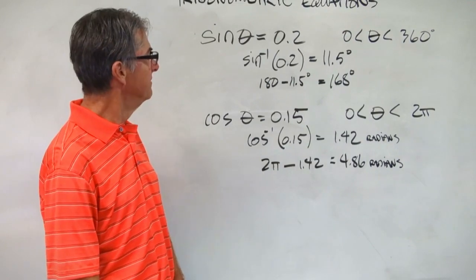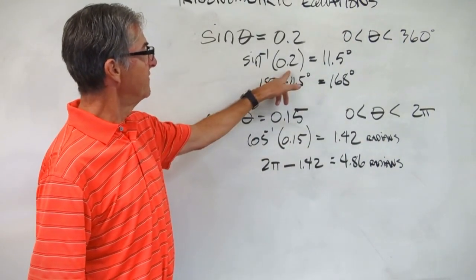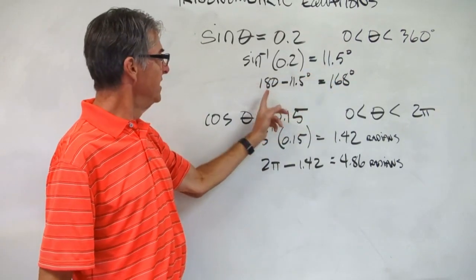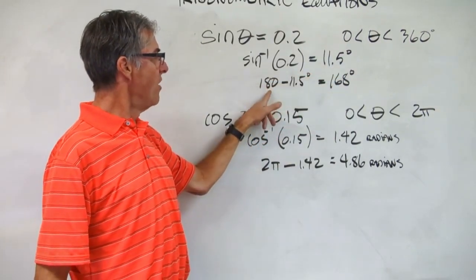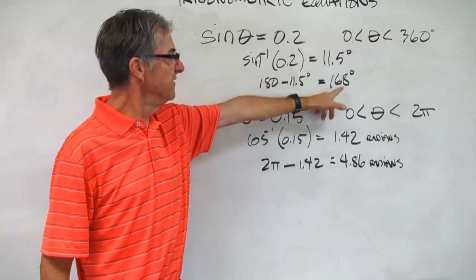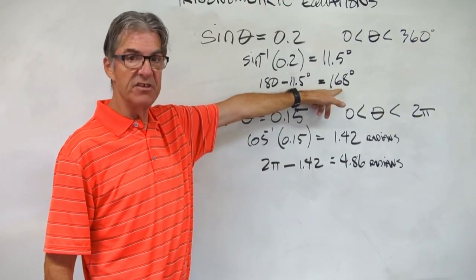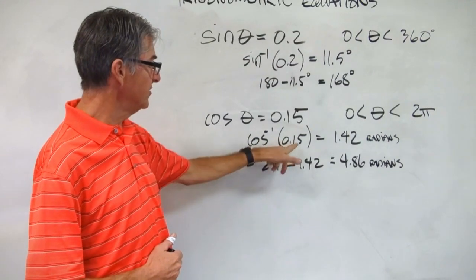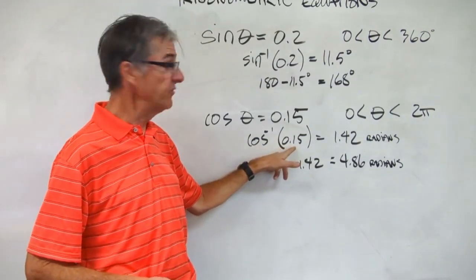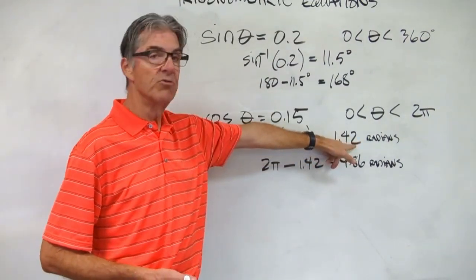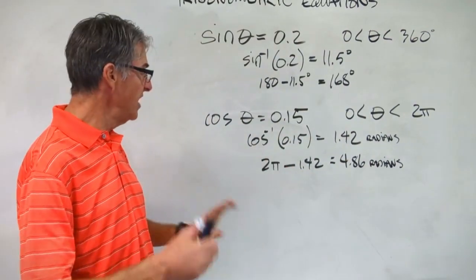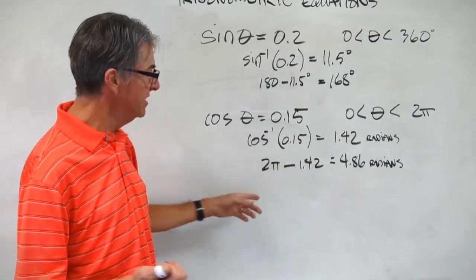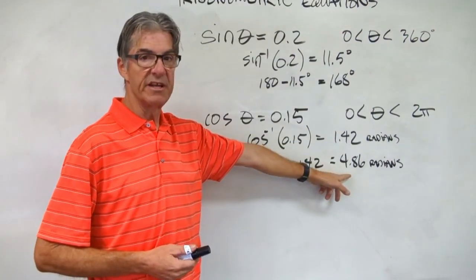Let's see how you did. The inverse sine of 0.2 gives me 11.5 degrees to three sig figs. Then I subtract that from 180 to give me 168 degrees. On the cosine side, I did the inverse cosine of 0.15 in radians and got 1.42 radians. With cosine, I subtract this result from 2 pi and got 4.86 radians.